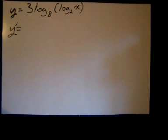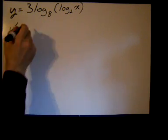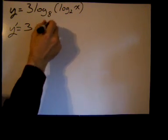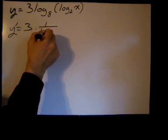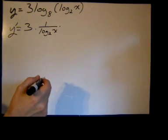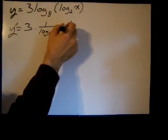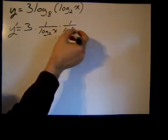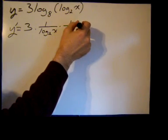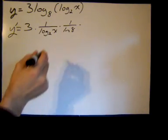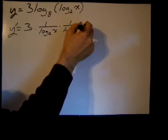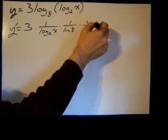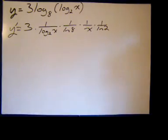So, y prime equals the constant, it's just 3, times 1 over the argument is log base 2 of x times 1 over the natural log of the base, which is 8, that's 8 is 2 cubed by the way, times the derivative of the argument, which is log base 2 of x. So the derivative of log base 2 of x is 1 over x times 1 over the natural log of the base, which is 2.